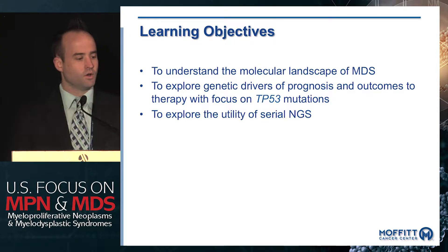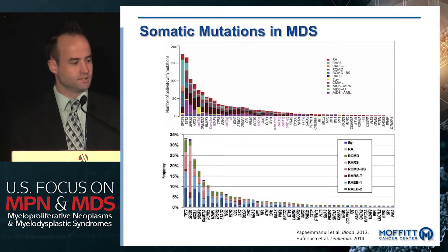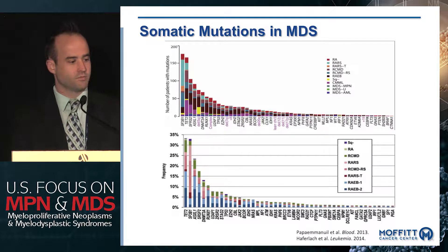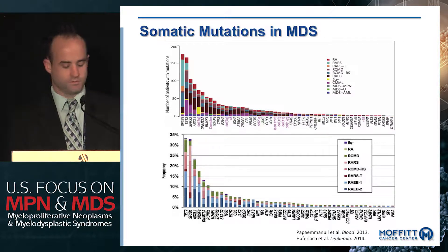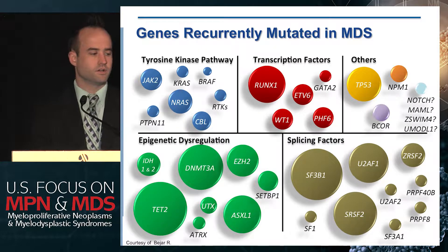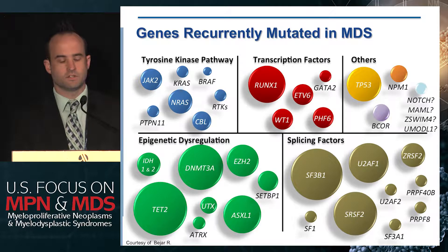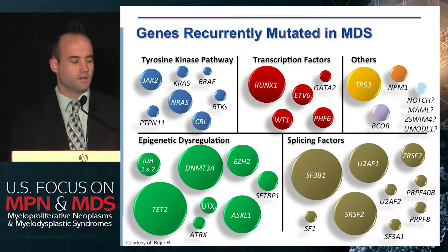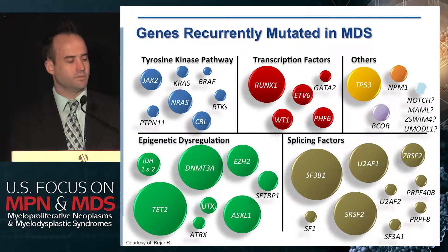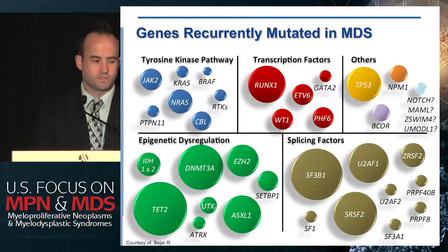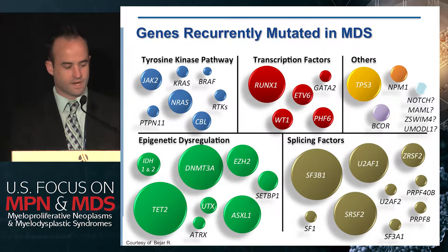Work by multiple groups has comprehensively characterized the mutational spectrum of patients with MDS, where we can identify mutations in approximately 80 to 90 percent of patients, with some genotype-phenotype correlations. Mutations are involved in multiple pathways — the size of the circle represents mutation frequency — and splicing factors and epigenetic dysregulation are by far the most frequent, but there are also mutations in tyrosine kinase pathways, transcription factors, and others.